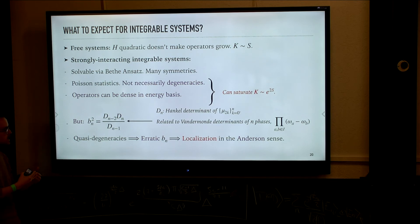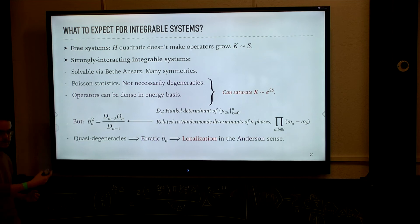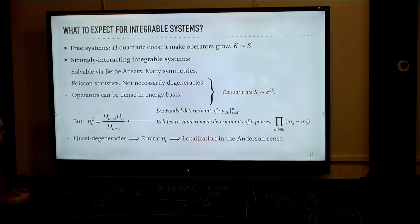In free systems, this type of Hamiltonian doesn't make operators grow, so whatever the size of the Krylov space is, it's going to grow at most linearly with the system size — it's given by the subspace of operators of a fixed size equal to the size of the initial condition. So in that case, Krylov complexity is bounded from above by something much lower than the upper bound we found for SYK, which was exponentially big in system size.